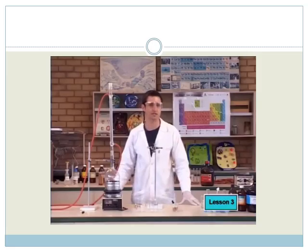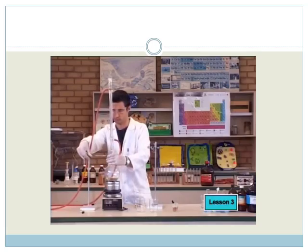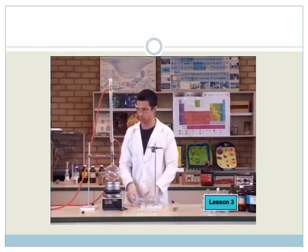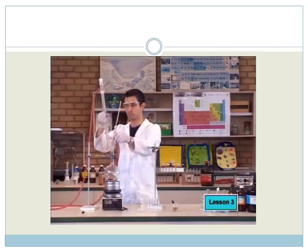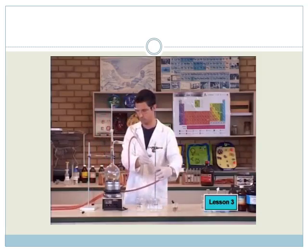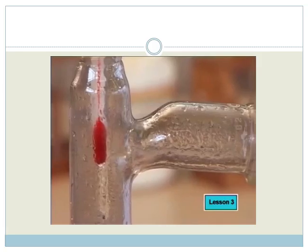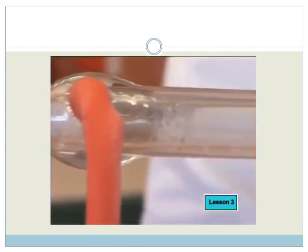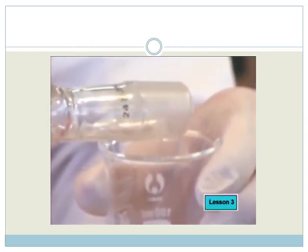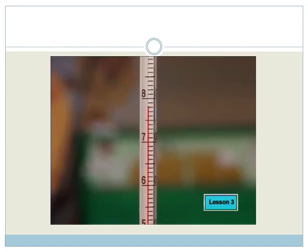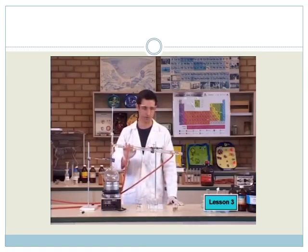Now, we must distill the mixture to separate the parts of the mixture. The ethanol boils off easily at 78 degrees. The mixture will boil over here, past the thermometer and into the condenser where it will turn into a liquid and collect here.